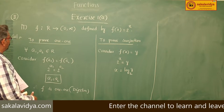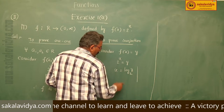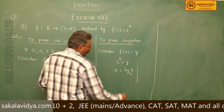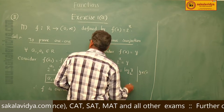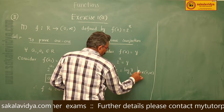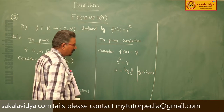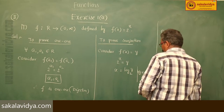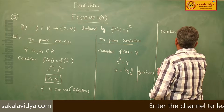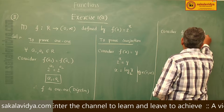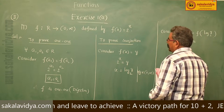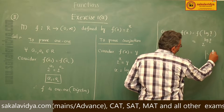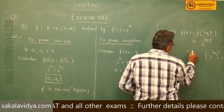Here, y belongs to (0, ∞), so log y to the base 2 belongs to (0, ∞). Now consider f(x) = f(log y to the base 2). Since f(x) = 2^x, this equals 2^(log y base 2). From tenth class, we know 2^(log_2 n) = n. So this equals y, meaning f(x) = y.